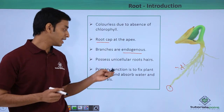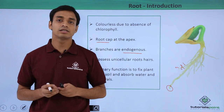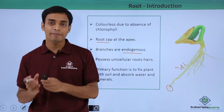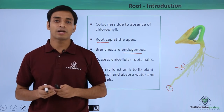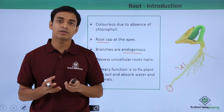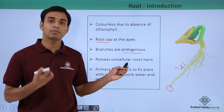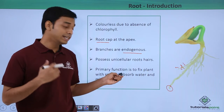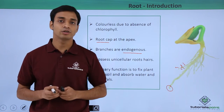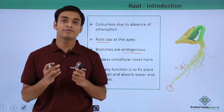The primary function of roots is to help in fixing the plant to the soil. This is done in order to prevent damage or the falling of the plant due to wind, flowing water, heavy winds, and rainfall. So roots help in firmly anchoring the plant within the soil.